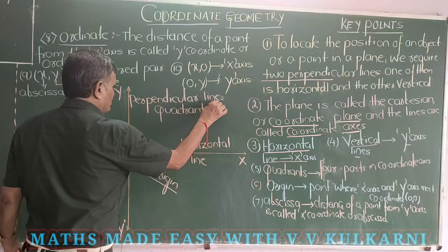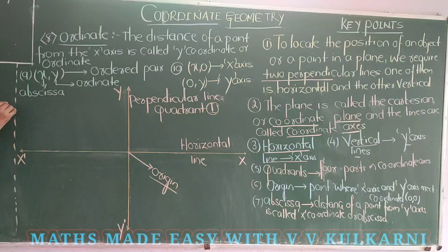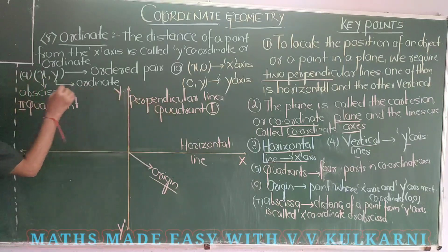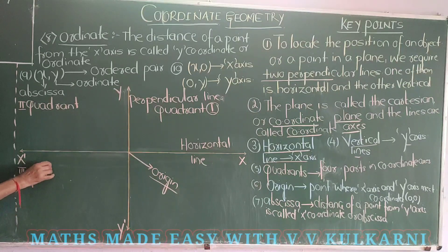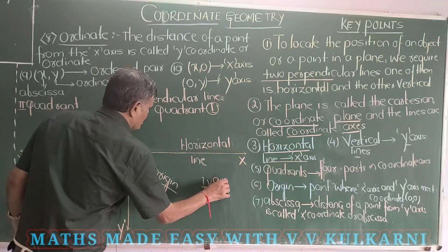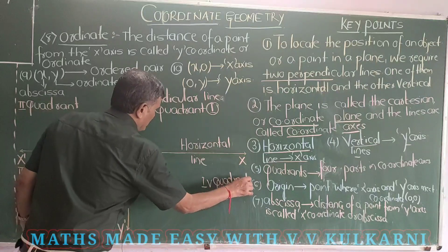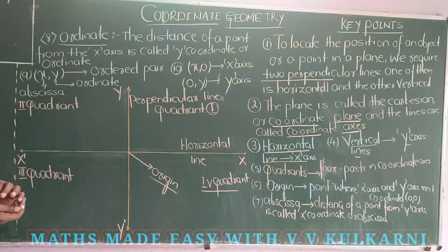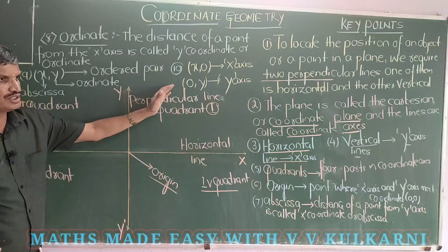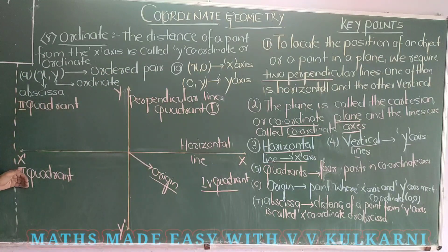This is the first quadrant. This is quadrant one. This is the second quadrant. In a graph there are four parts and each part is called a quadrant. You should always take the quadrant from here — this is first, this is second, this is third, and this is fourth.